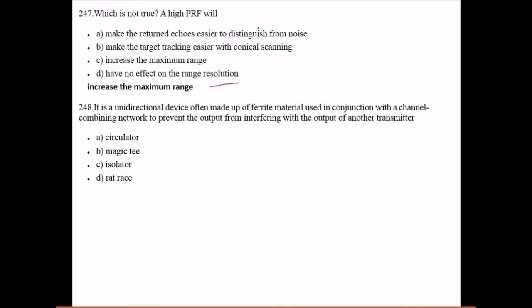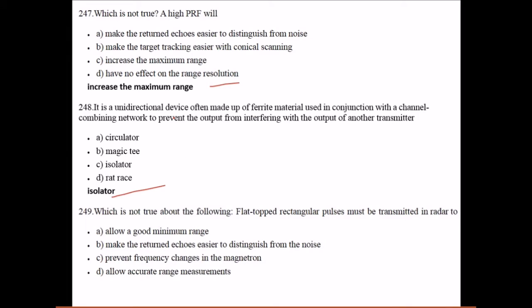A unidirectional device made of ferrite material used in conjunction with a channel combining network to prevent the output from interfering with the output of another transmitter - what is it? It is an isolator. Which is not true? Flat-top rectangular pulses must be transmitted in radar to make the return echo easier to distinguish from the noise - this is not true.